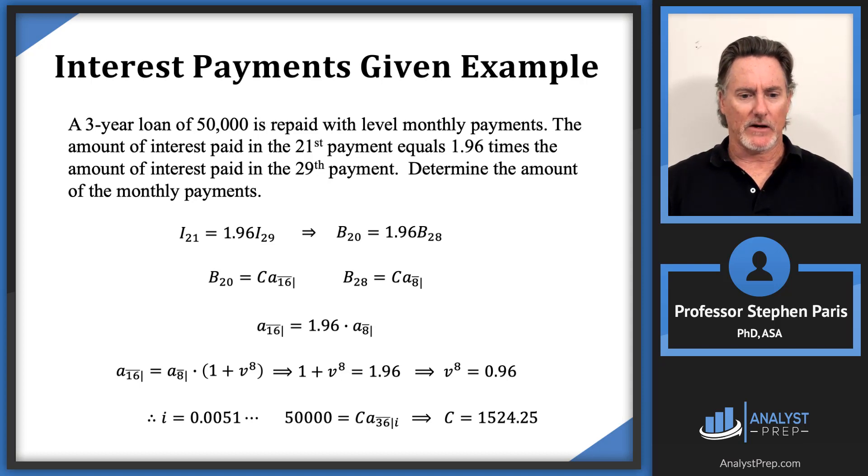One comment before I end the video is that this second line there, they related, they gave me this information that relates the amount of interest in the 21st payment and the 29th payment. Those are not random numbers there. They can't just give you random values there. They have to give you some information so that your equation relates like a angle 2n with a angle n.